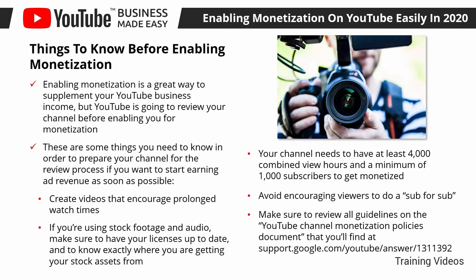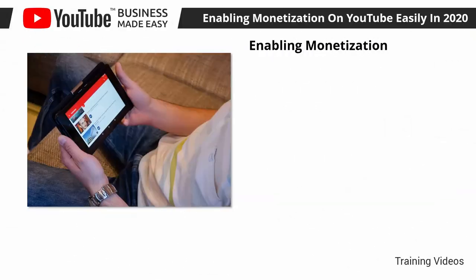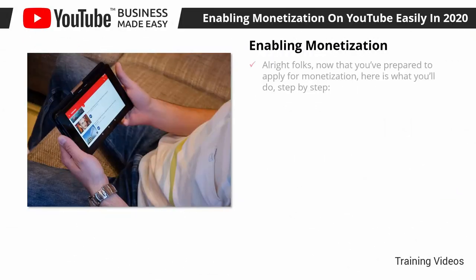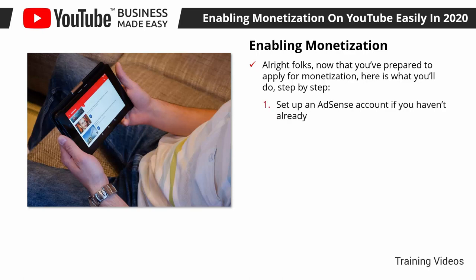Enabling monetization step by step. Number one: set up an AdSense account if you haven't already — AdSense is the ad revenue share program for publishers and creators, and that's where YouTube will process your payments. You can create an AdSense account at google.com/adsense/start. Number two: sign in to your YouTube account and the channel you want to monetize. Click on the profile menu button, and then click on the Creator Studio button.